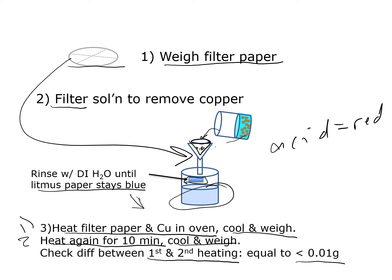It's important that the filter paper is completely dry because if it still has water on it, that moisture will add to the measured mass, making it appear as if there is more copper than there actually is.